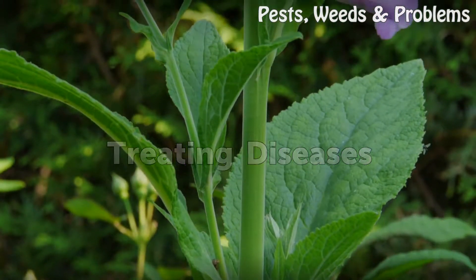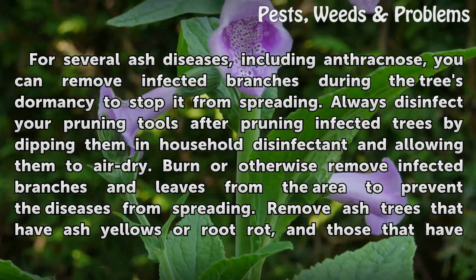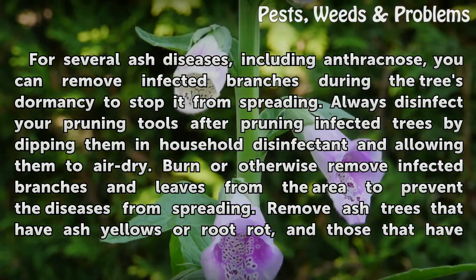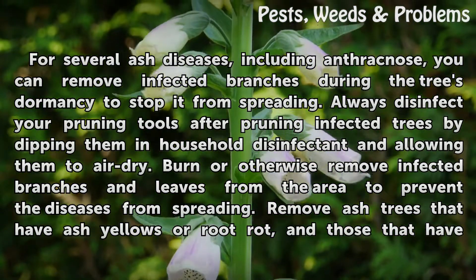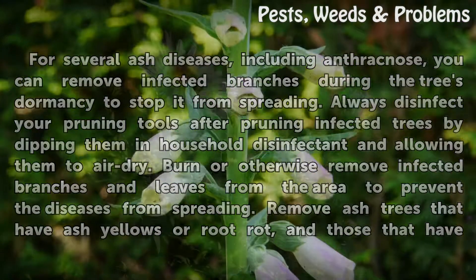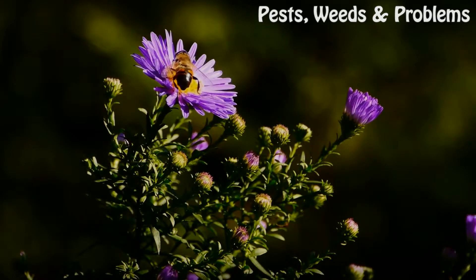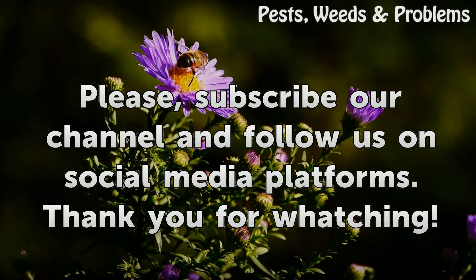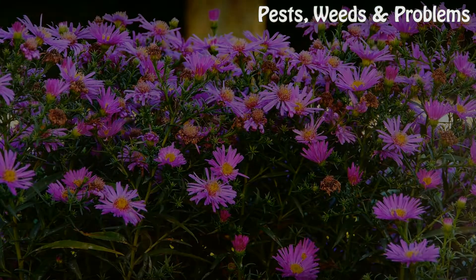Treating Diseases. For several Ash diseases, including anthracnose, you can remove infected branches during the tree's dormancy to stop it from spreading. Always disinfect your pruning tools after pruning infected trees by dipping them in household disinfectant and allowing them to air dry. Burn or otherwise remove infected branches and leaves from the area to prevent the diseases from spreading. Remove Ash trees that have Ash yellows or root rot, and those that have been severely damaged by Verticillium wilt or other diseases.